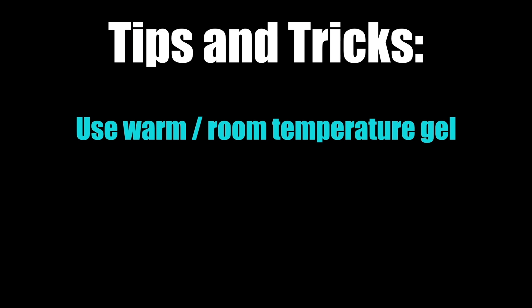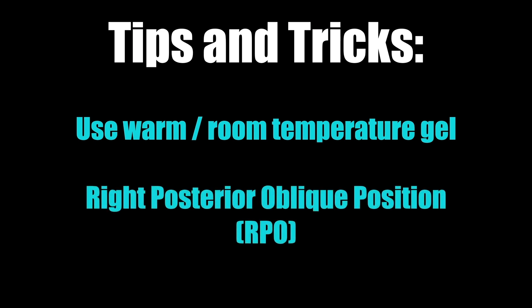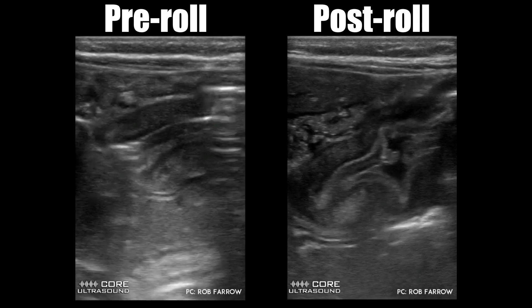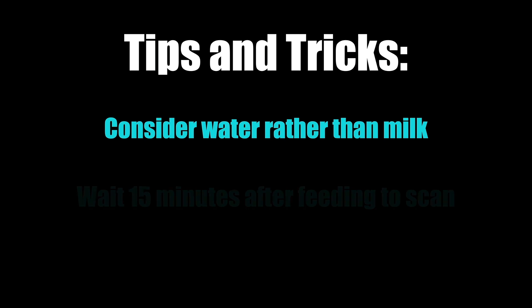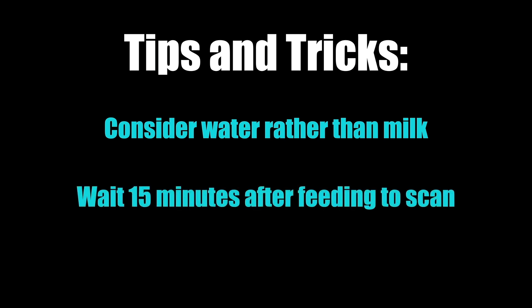Here are a few tips and tricks to help you be more successful when diagnosing pyloric stenosis in your emergency department. First, use warm, room-temperature gel. Additionally, you may want to consider using a right posterior oblique position — achieved by putting rolled-up towels under the patient's left side. This pushes fluid towards the antrum and moves gas in the stomach up towards the fundus, improving your ultrasound window and making it easier to identify the pylorus. Consider using water rather than milk if you need to add volume to improve your window, as milk tends to have more gas and makes it harder to see the antrum and pylorus. Finally, if you do have to feed the patient, try to wait at least 15 minutes after feeding before scanning, to avoid pyloric spasm and inaccurate measurements.